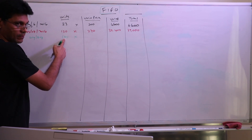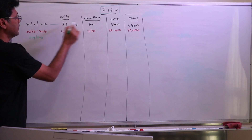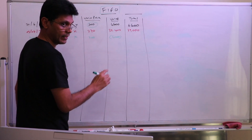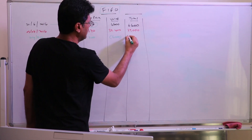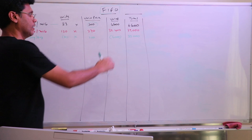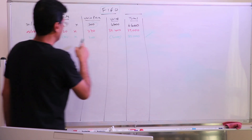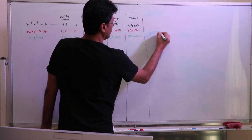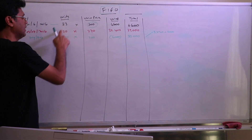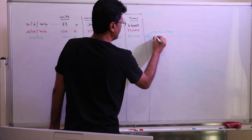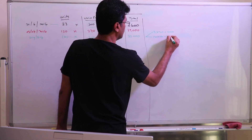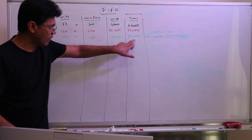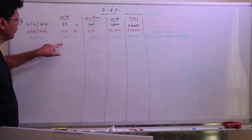After issuing 30 units from opening stock, how many remaining from the 33? That's 3 units remaining at $200, which equals $600. And the 120 units purchased in July are also still remaining at $270 each — 120 times $270 equals $32,400. Together, the total valuation is $33,000. This is the breakdown: 3 units remaining and 120 units remaining.